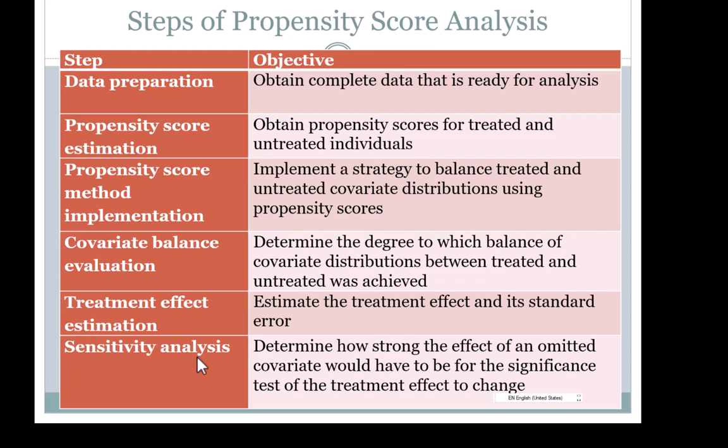After you prepare your data to deal with missing data and outliers, propensity score estimation is the next step. There are several methods, such as logistic regression and machine learning methods such as random forests and generalized boosted modeling. The propensity score implementation step is to implement a specific strategy to use the propensity scores. The most common are inverse probability of treatment weighting, propensity score matching using the logit of the propensity score, and marginal mean weighting, where you use strata and calculate weights to balance the covariate distributions between treatment and control groups.